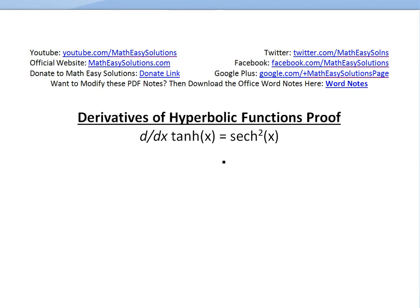Hi, it's time for another Math Easy Solution to discuss another derivatives of hyperbolic functions proof video. And now we'll go over this derivative here, basically derivative hyperbolic tan of x equals hyperbolic secant squared of x, and basically prove this derivative here.